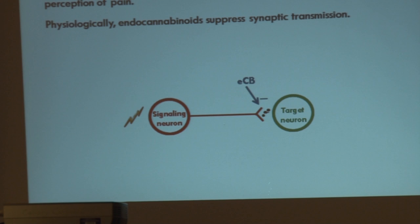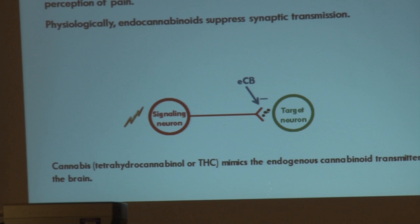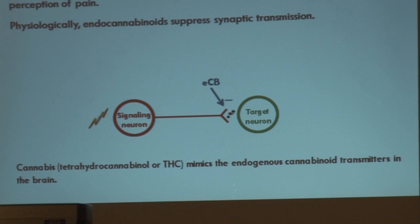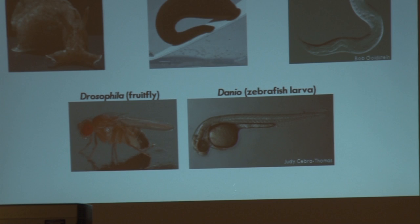Some of you may be thinking: endocannabinoids, cannabinoids — there's something about this word that rings a bell. You would be right. The word you're thinking of is cannabis, or tetrahydrocannabinoid, which is the active ingredient in marijuana. When people use marijuana, the reason it has the effects it has is that it's mimicking the actual endogenous neurotransmitters we already have in our brain. As an employee of the state of South Dakota, I feel obligated to say I'm not advocating any use, therapeutic or non-therapeutic, of any illegal substances — but I do think there are genuine uses that can come from manipulating this endocannabinoid system in a very controlled manner.